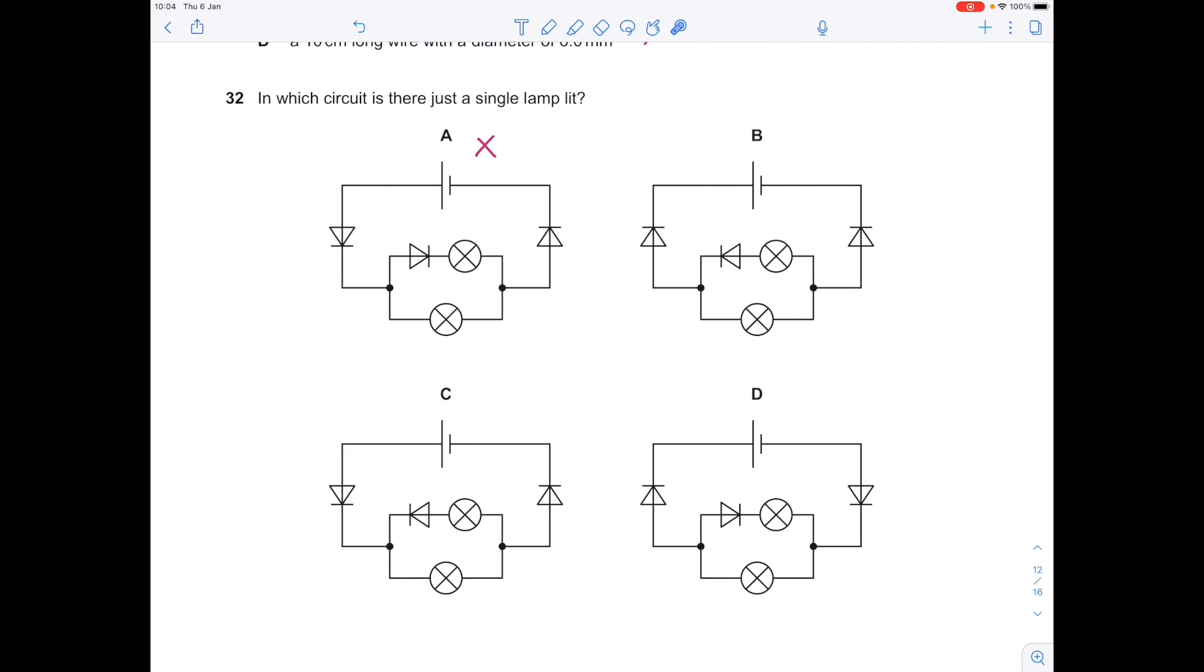Let's look at B. You've got issues here in that the current just isn't going to flow through this diode, so that's going to be a problem for B.